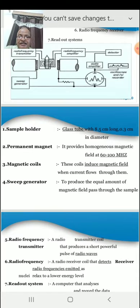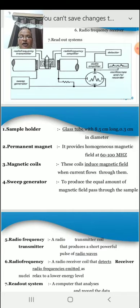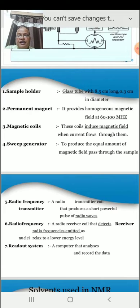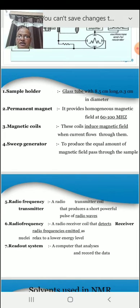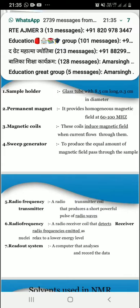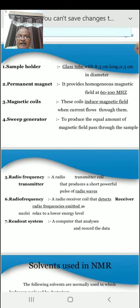The radio frequency transmitter is a transmitter coil that produces a short, powerful pulse of radio waves. The radio frequency receiver is a receiver coil that detects radio frequencies emitted as nuclei relax to lower energy levels. The readout system is a computer that analyzes and records the data.